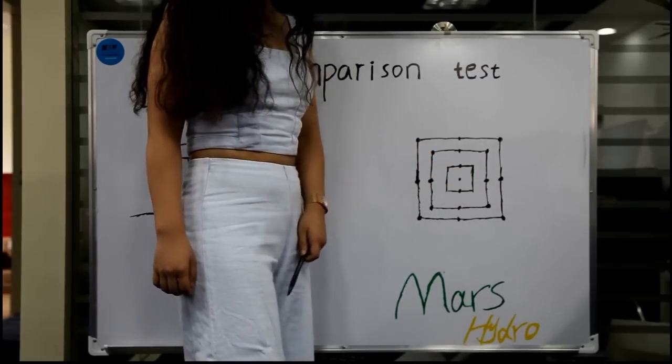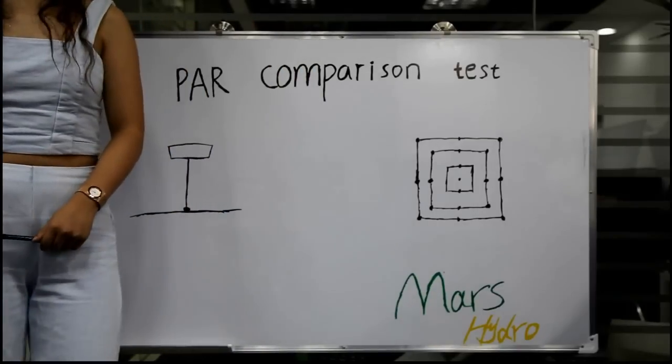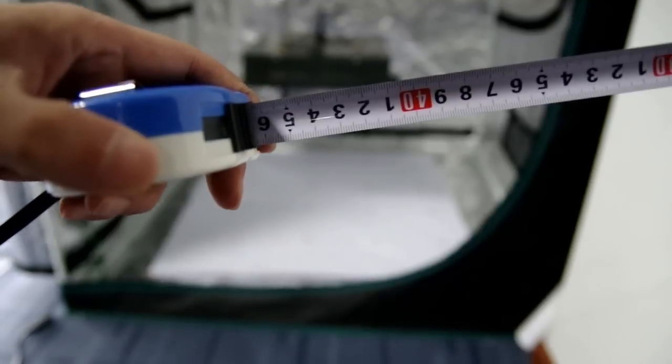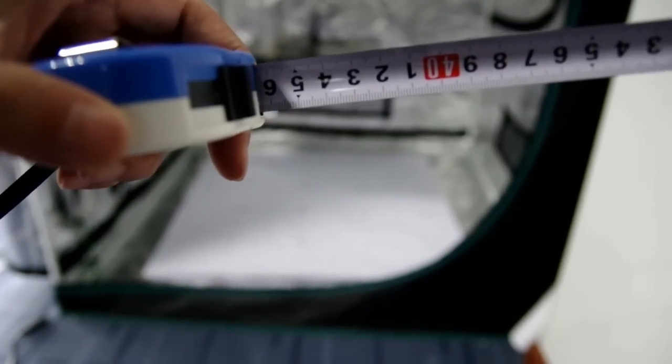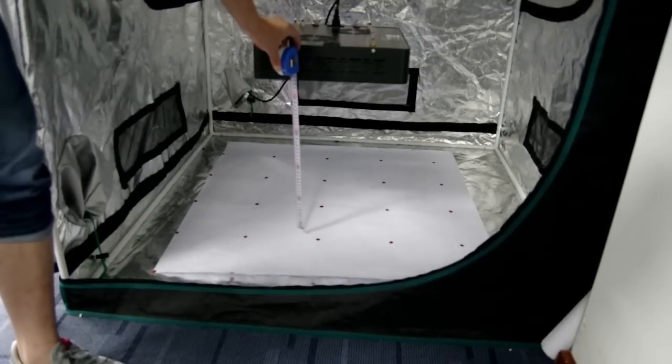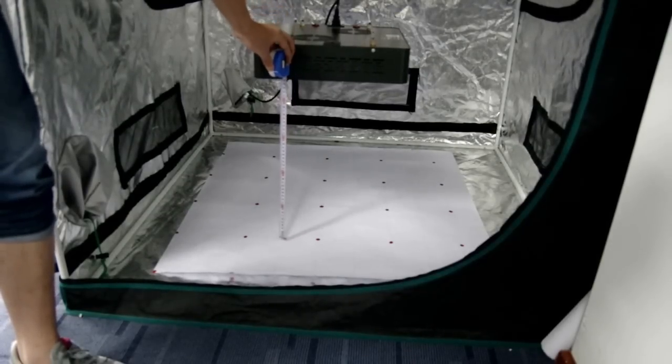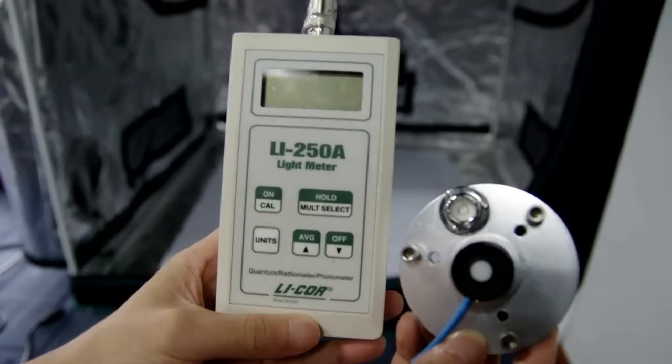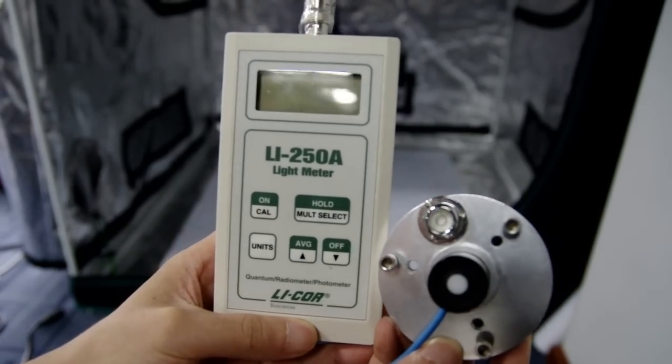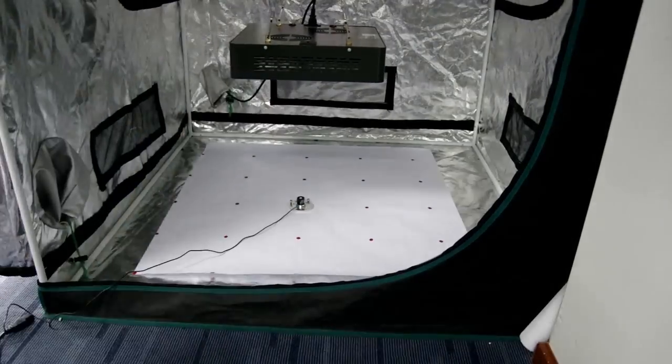Next we will do the test with the two lights so you can see the data. What we did is measure them at 18 inches, and the whole coverage is a 3 by 3 feet grow area. This is the equipment we got to measure it. So here we go.